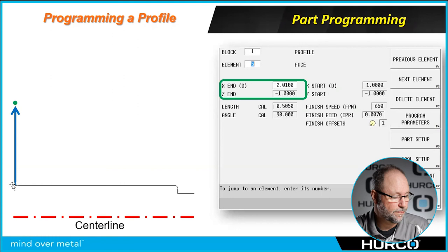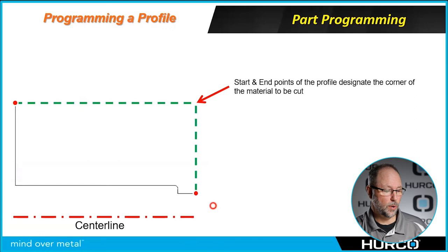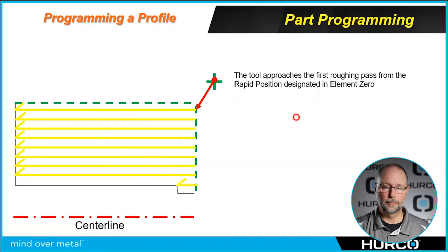Then we're going to finish this with a face coming all the way up. You'll notice that we went to 2 inches and 10 thousandths here. We always want to pull off the material by a little bit. Now you can see that if we start with a turn, we end with a face. Where those two points are, the starting point and the ending point, it's going to find this intersecting corner and that's where it thinks the material begins and that's where all of our roughing is going to begin.